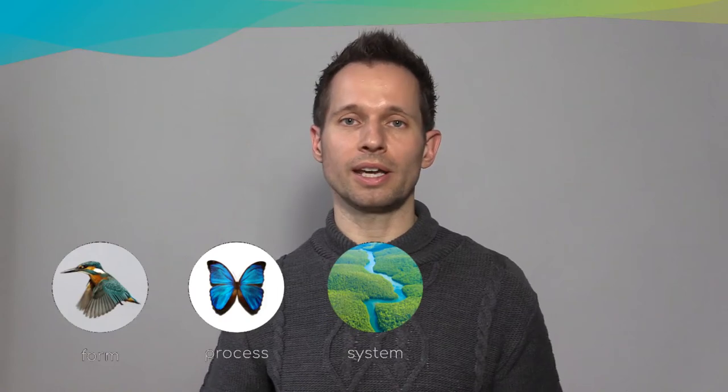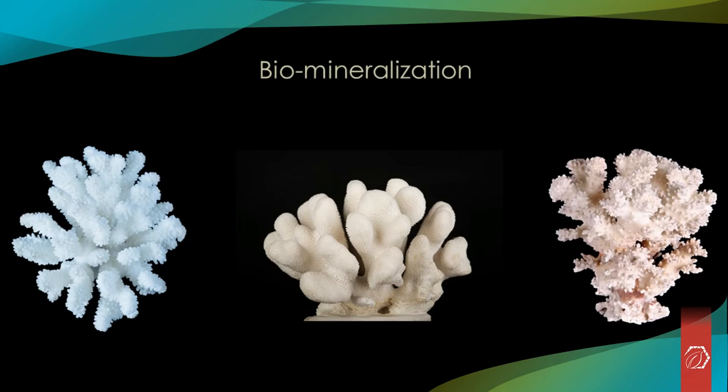The second level of biomimicry is process. One example is part of the built environment. When we build today, we use a lot of cement, and the problem is that producing cement is a very energy-intensive process — per ton of cement, we produce about one ton of carbon dioxide. Interestingly, in nature we find a process that is exactly opposite, called biomineralization. We know this effect from coral reefs. The material of coral reefs is identical to cement — it's calcium carbonate — but this calcium carbonate is not made by producing carbon dioxide; it uses atmospheric carbon dioxide and fixes it into a built material.